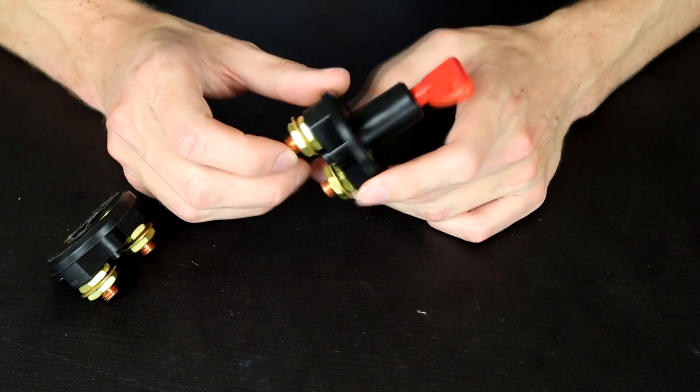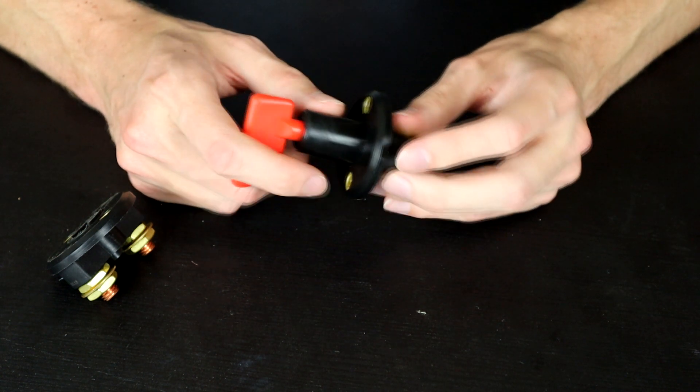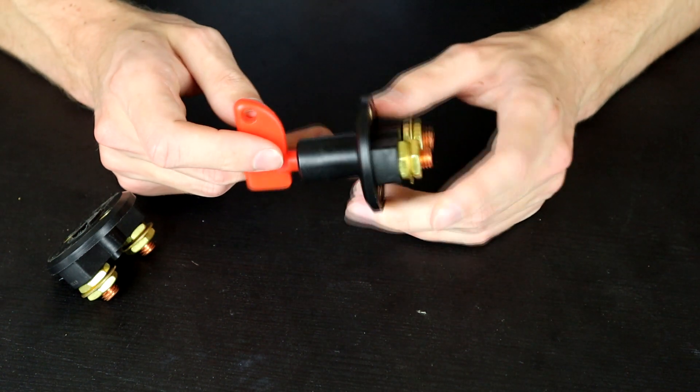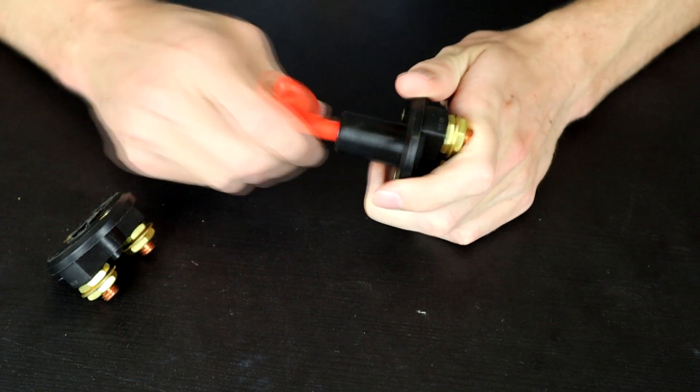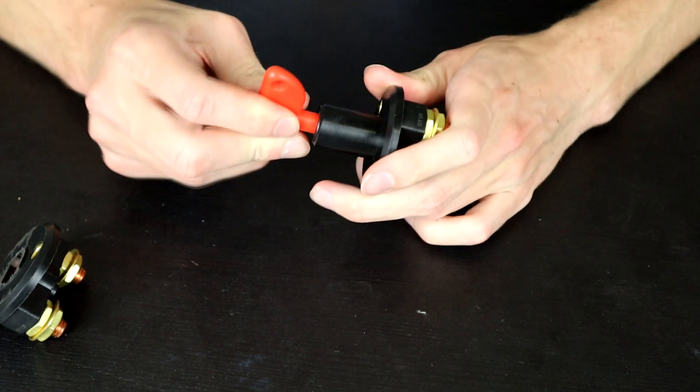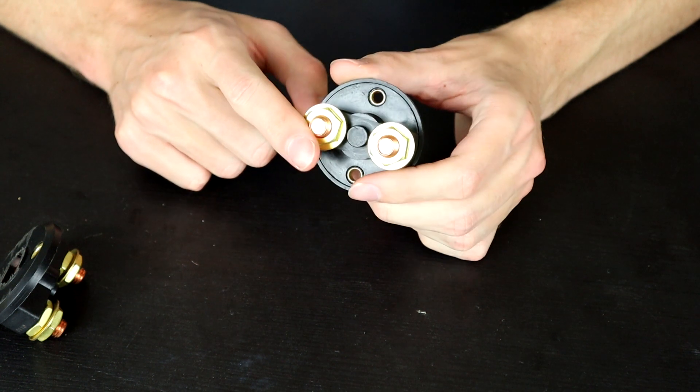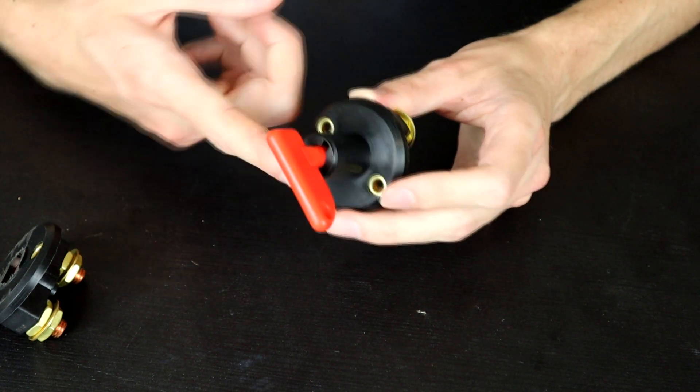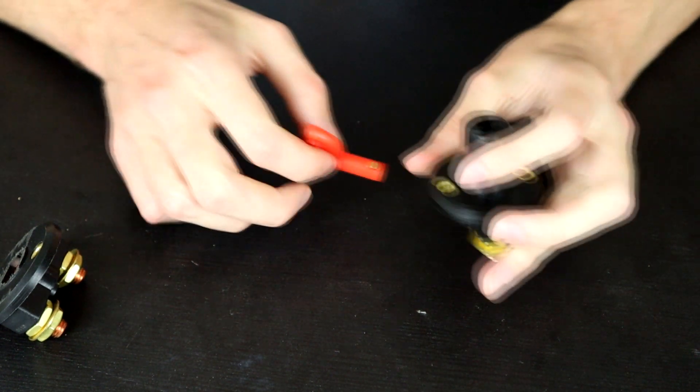However, these are a very cheaply made product so the marketing around them is all over the place. Some say 100 amps, some say 300 amps. Now the way these work is I have a key at the top here. You turn the key, when the key pops out the switch is off. When you put the key in, push down and turn, then the switch is on. And basically this whole top section is completely superfluous because we don't want a big plastic switch in a BattleBot.